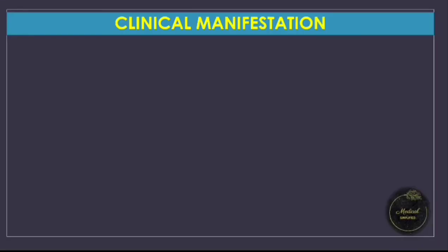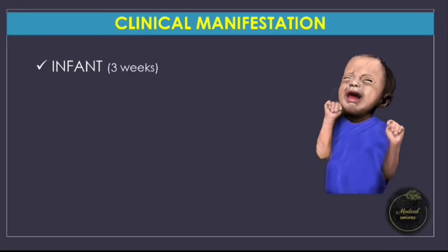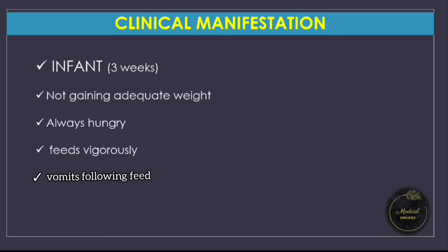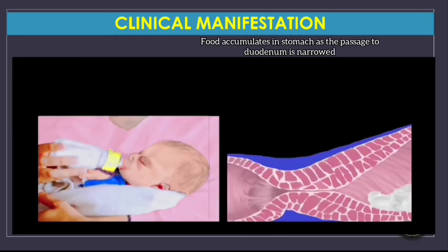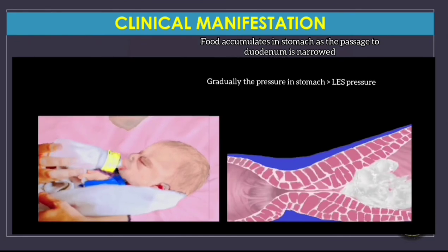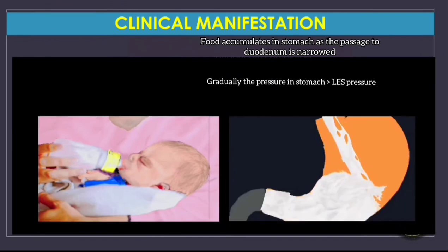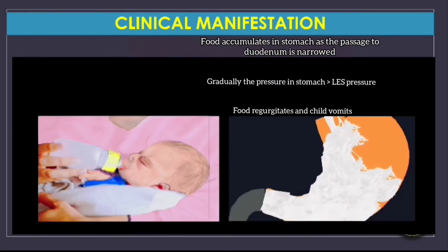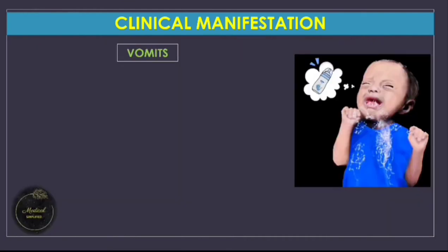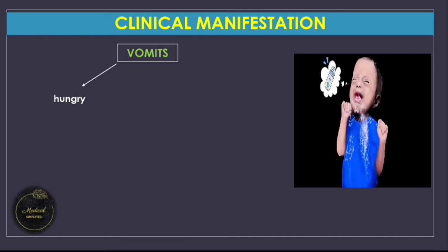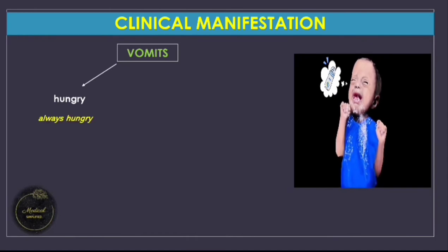Features that should raise suspicion include an infant of approximately three weeks of age who is not gaining weight adequately, is always hungry, feeds vigorously, and vomits following a few or almost all feeds depending on severity. As the baby feeds, milk begins to accumulate in the stomach as the passage out is narrowed. As stomach pressure rises above lower esophageal pressure, the lower esophageal sphincter opens and the feed is vomited. The stomach empties, the baby is undernourished, cries for feed, and the cycle continues — despite multiple feeds, the baby does not gain adequate weight.